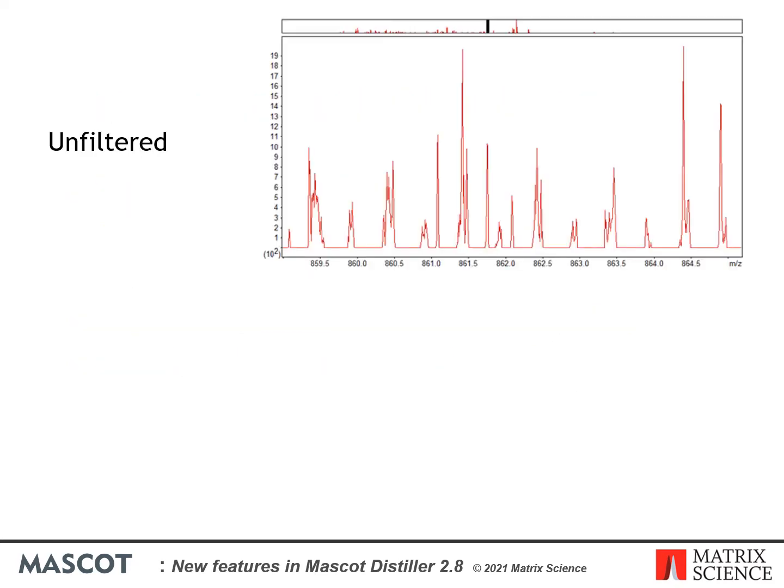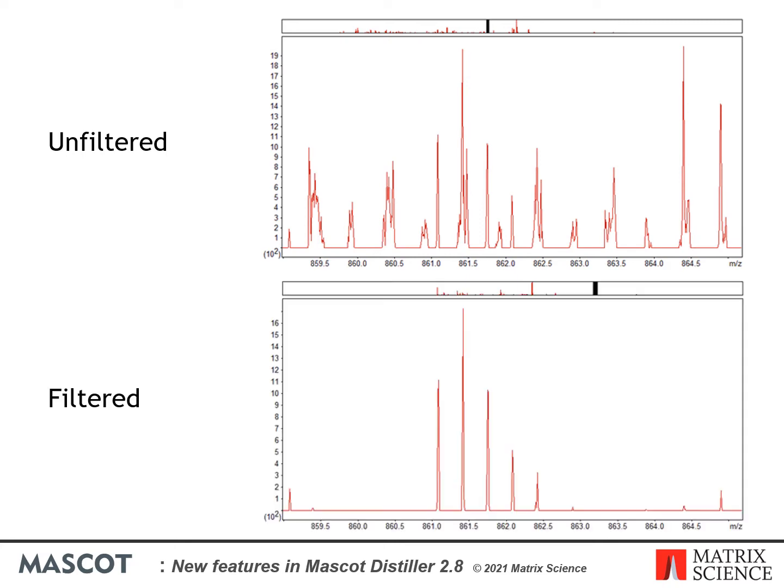Here we can see an unfiltered scan from the precursor region of a peptide. This is a low intensity precursor and as you can see there is a lot of noise and interfering signal present. With filtering enabled, the signal in the precursor area is much cleaner with very little noise and interference, despite this being a low intensity precursor.